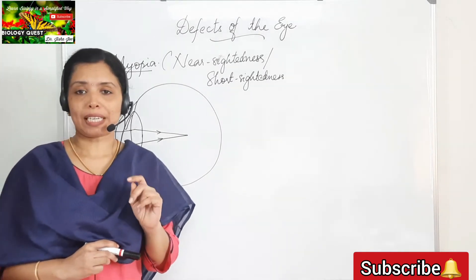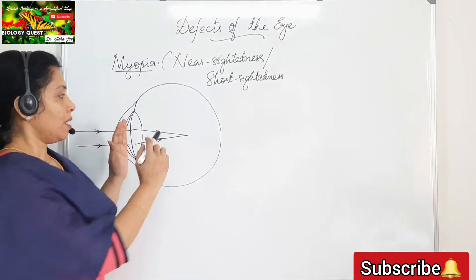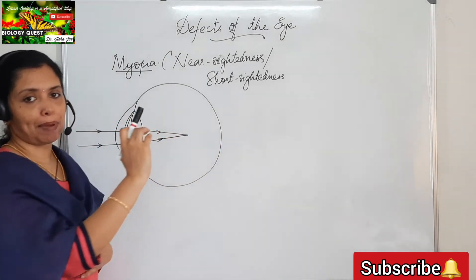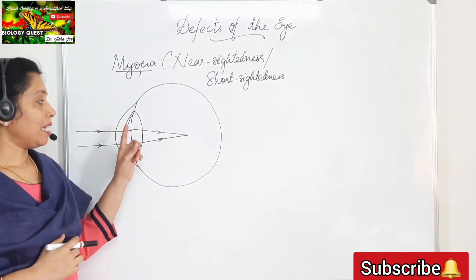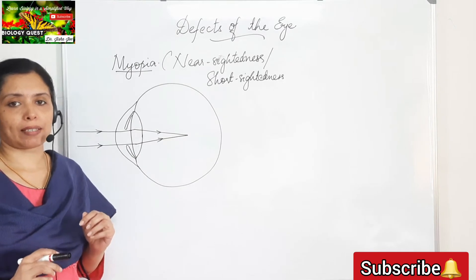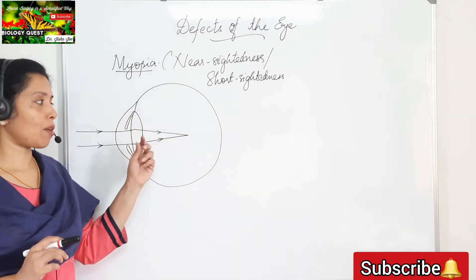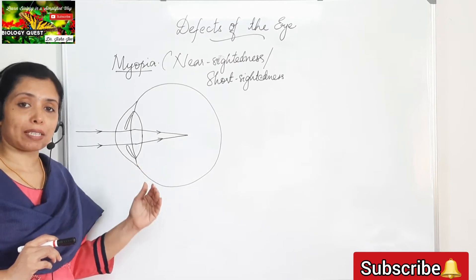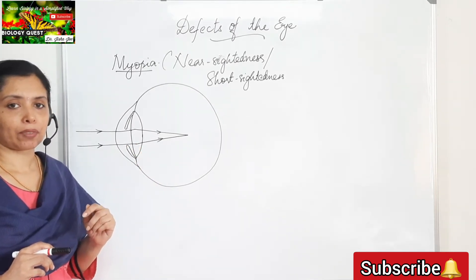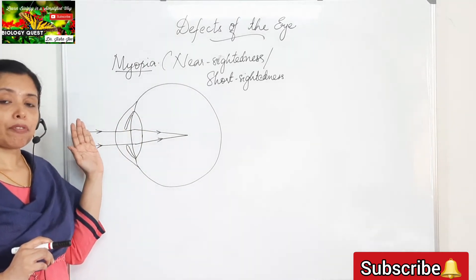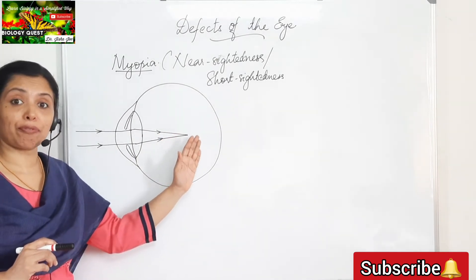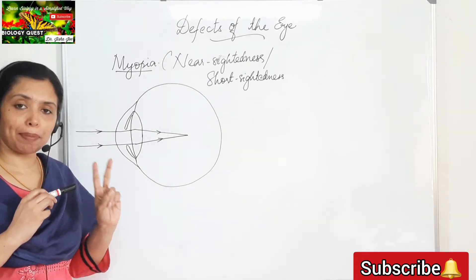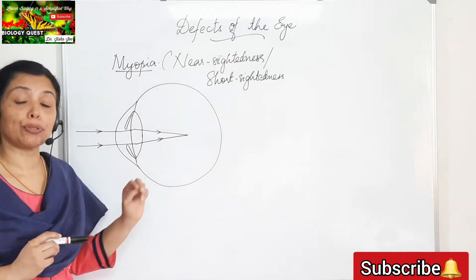This may be due to two reasons. The first reason is the lengthening of the eyeball from front to back. Or the lens might have become too convex. So if the lens has become too convex or too rounded, the same thing can happen. It might be due to any one of these reasons or both. In myopia, the light rays from distant objects form the image in front of the retina, due to: first, lengthening of the eyeball from front to back; and second, the lens becoming too convex.